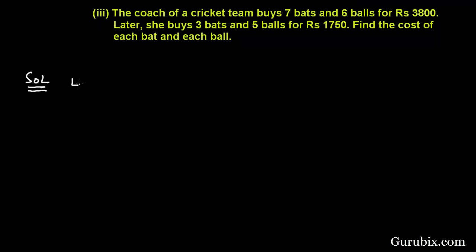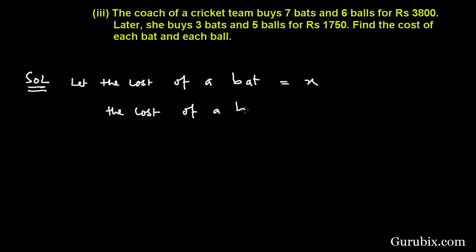Let us see how to solve it. First of all, let the cost of a bat be rupees X and the cost of a ball be rupees Y. In condition one, it is given that the coach buys seven bats and six balls.